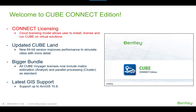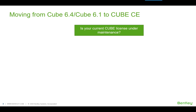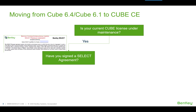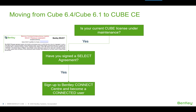This video focuses on Connect licensing and will take you through the process of getting started with Cube Connect Edition. If you're an existing Cube user and want to move from Cube 64 or Cube 61 to Cube Connect Edition, you need to first check if your current Cube license is under maintenance. If yes, check whether you have signed a Select Agreement with Bentley — a standard license agreement for all Connect Edition Bentley products. If your organization has signed a Select Agreement, your Cube Connect Edition licenses will be available to you.